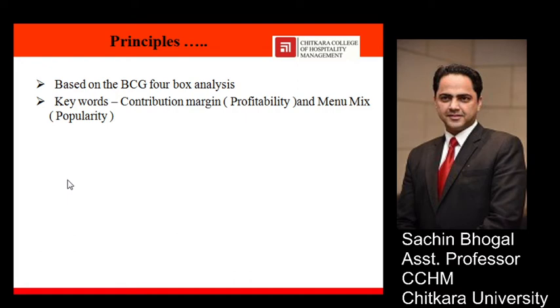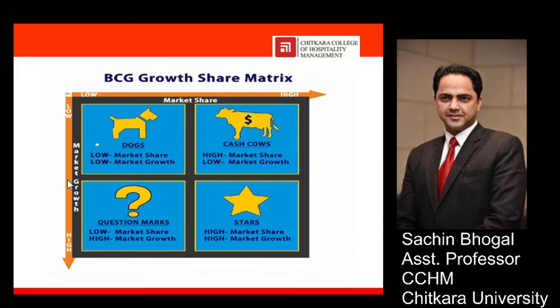In the context of the menu, contribution margin refers to profitability, and menu mix refers to the popularity of a dish. In the BCG matrix four-box analysis, you can see there are four categories: number one is Stars, number two is Cash Cows, number three is Question Marks, and number four is Dogs. Stars have high growth and high market share; Cash Cows have high market share but low market growth; Question Marks have low market share but high market growth; and Dogs have low market share and low market growth.